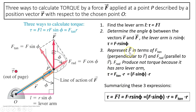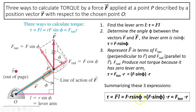The third way: decompose force into F-perpendicular and F-radial. F-radial is parallel to R and does not produce any torque. F-perpendicular is the component that produces torque, so torque equals F-perpendicular times R. Since F-perpendicular equals F times sine phi, torque again equals F times R times sine phi. So the three ways are: force times lever arm, or F times R times sine phi, or F-perpendicular times R — all giving the same result.